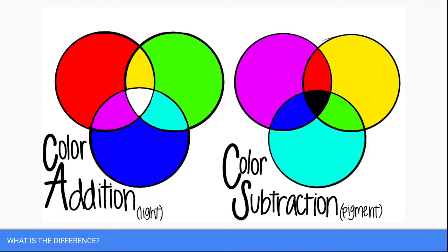These triple Venn diagrams are showing the comparison of color addition and color subtraction. Color addition is the process of a color reflecting off of the object, and color subtraction is the process of the color being absorbed into the object.